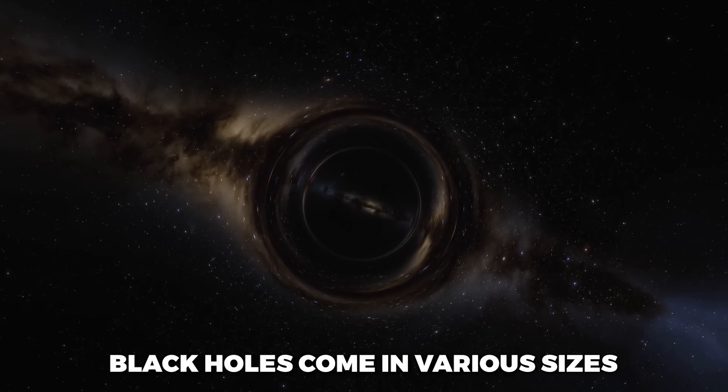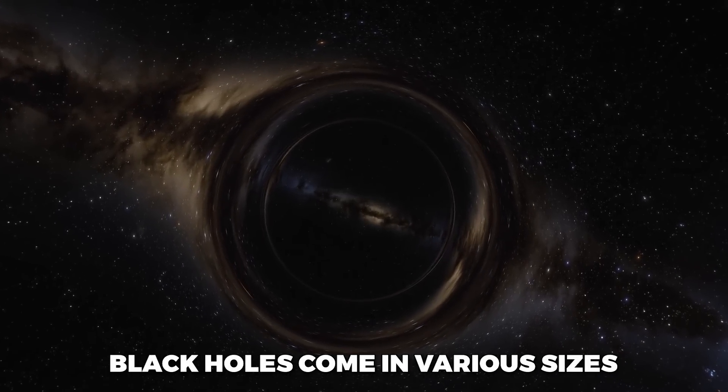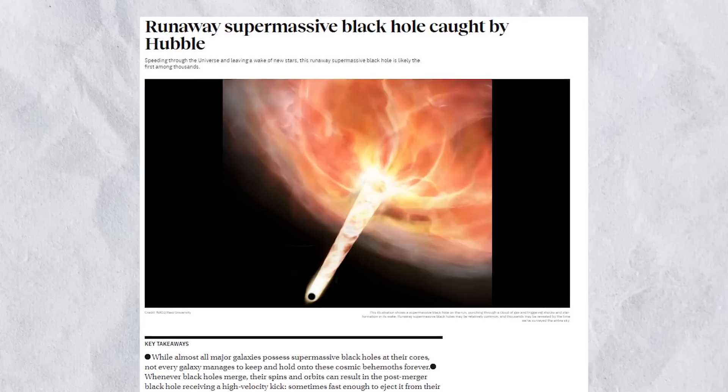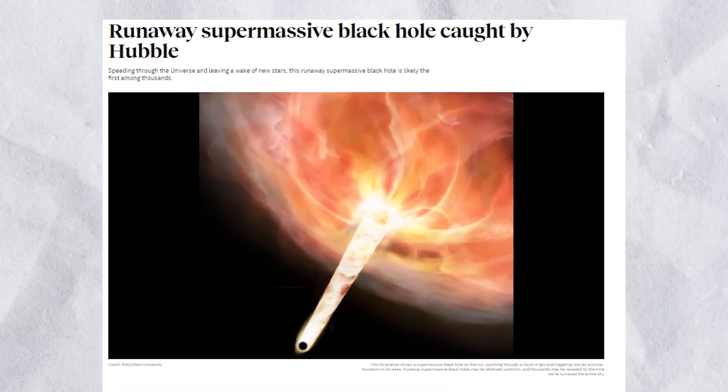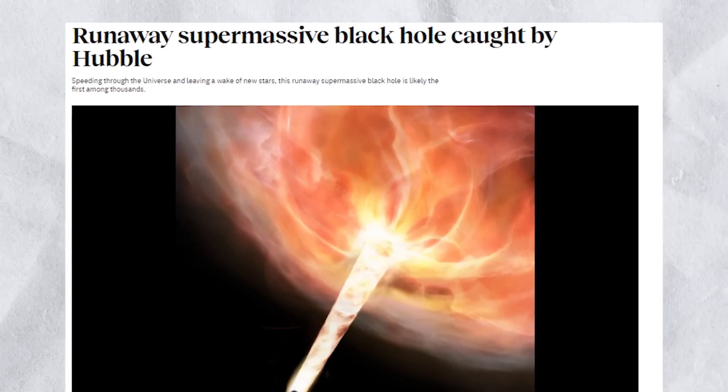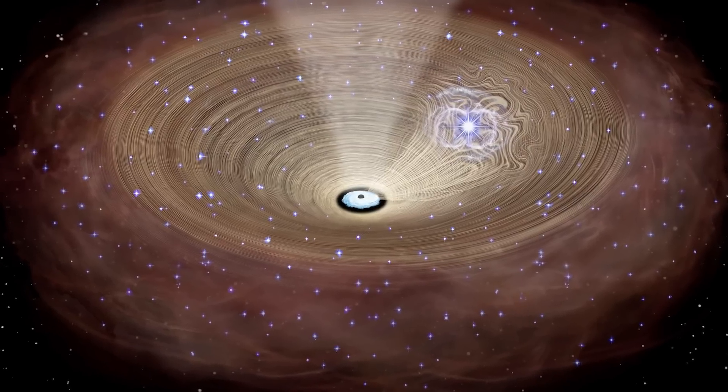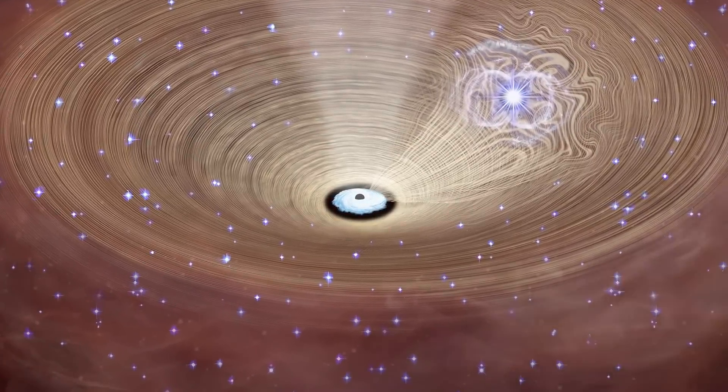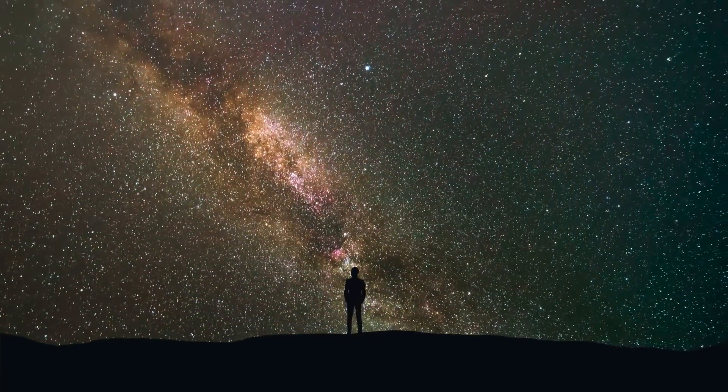Black holes come in various sizes, from tiny ones that are just a few times the mass of the Sun to supermassive black holes that are billions of times more massive than the Sun. Supermassive black holes are believed to exist at the center of most galaxies, including our own Milky Way galaxy.